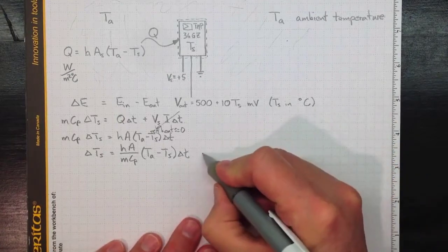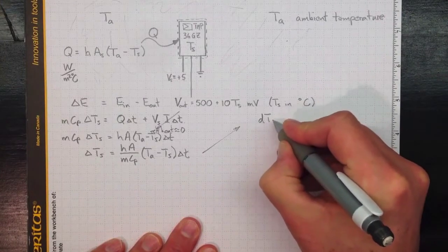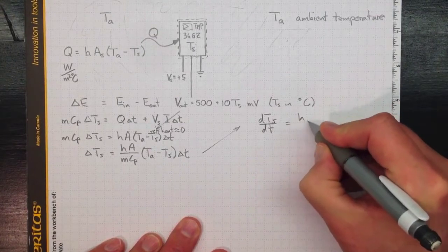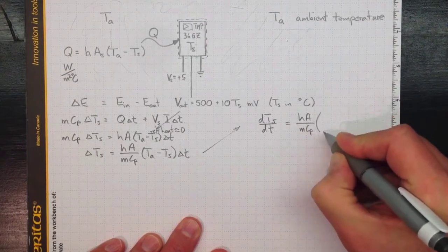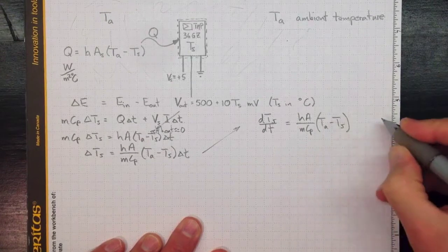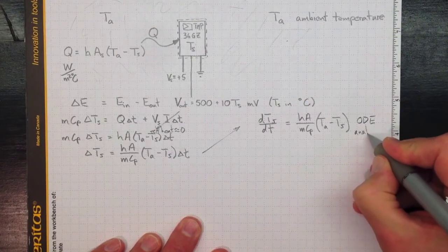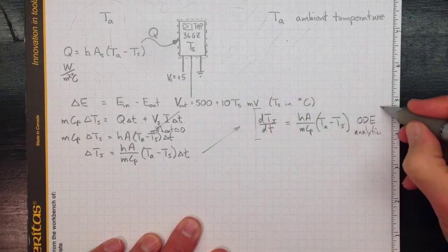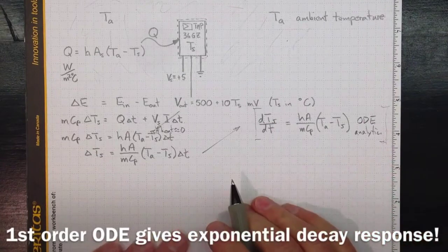And if we go off and do a little calculus dividing through, that'll get us something like DTS DT equal to HA over MCP TA minus TS. And that differential equation, that's an ordinary differential equation. And you could do an analytic solution of that if you went off to the ODEs course. But we'll leave that aside for the moment. We're going to get a numerical solution that we can get for a variety of situations.